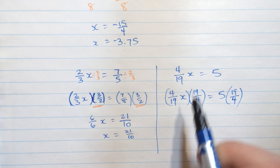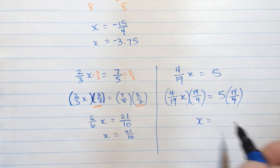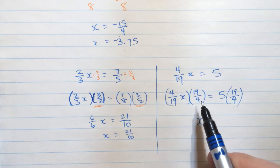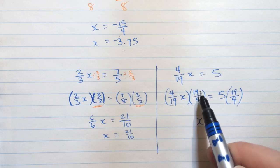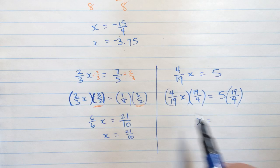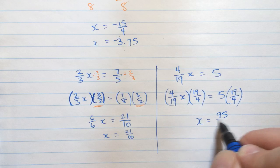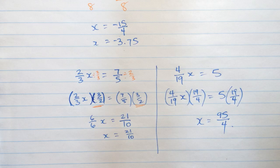And these will all cancel each other out, and I'll be left with just x on this side. It's the same as multiplying by the reciprocal of this is the same as dividing by this number. And 5 times 19 is 95 quarters. Okay, I hope that helps. Thanks.